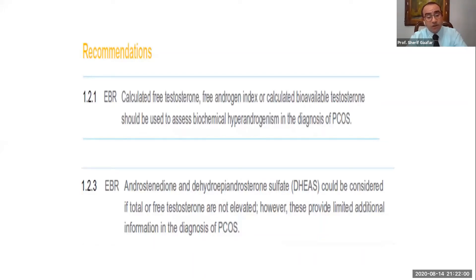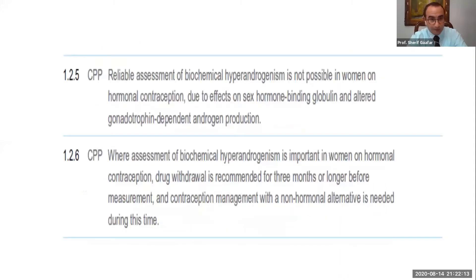You really need to measure androstenedione or DHEA-S because usually it would be normal. In cases of total or free testosterone which are not elevated, maybe you can find more information by measuring these hormones. Reliable assessment of biochemical hyperandrogenism is not possible in patients on hormonal contraception. A lot of these patients are on hormonal contraception either for contraception or for regulating their cycle. If a lady is on hormonal contraception, you need a withdrawal period of at least three months before assessing her androgens.